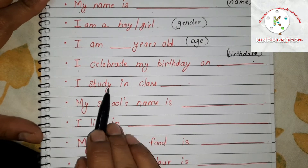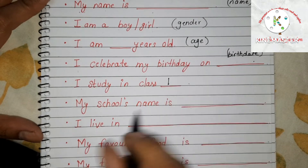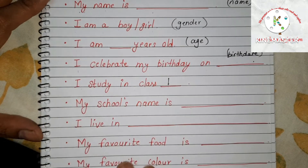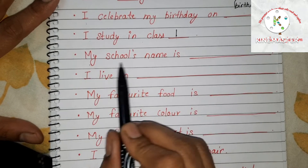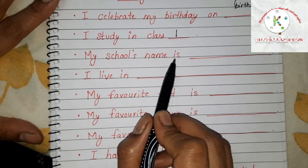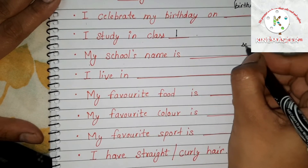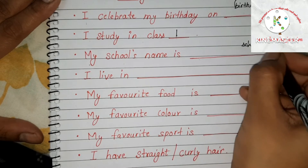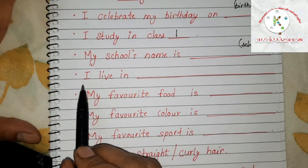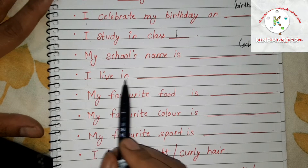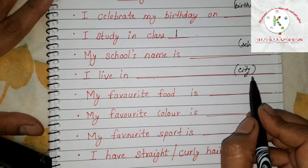The next field is 'I study in class 1,' so these worksheets are for Class 1 students. Then 'My school's name is,' where the child has to write his or her school's name. Next is 'I live in,' where the child has to write his city.